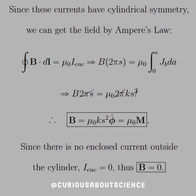Integrating through, we see some cancellation of the factors of 2π, and we find that B = μ₀KS²φ̂, which is just equal to μ₀M. This solidifies that B is very much related to M via the factor of μ₀. Since there is no enclosed current outside the cylinder, I_enclosed equals zero, and therefore B outside equals zero as well.